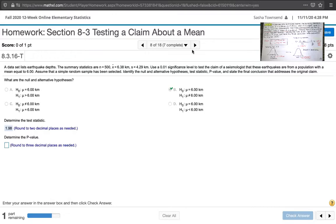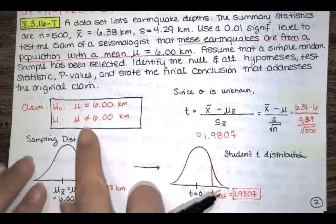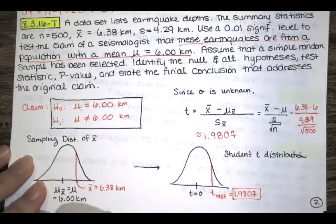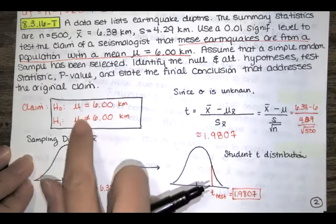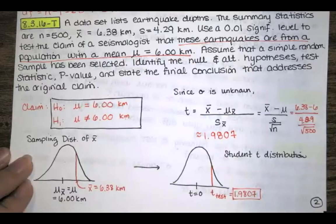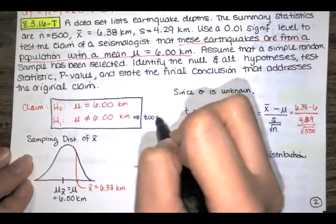Now we want to determine the P-value. The P-value depends on whether you're dealing with a one-tailed or a two-tailed test. To determine that, go back to the alternative hypothesis. Since this has a not-equal-to sign, we consider values significantly different from the mean if they are either significantly high or significantly low — this implies a two-tailed test.